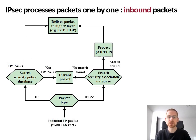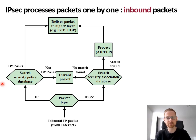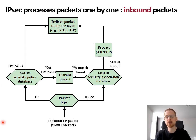This figure shows how incoming packets are processed by IPsec. An inbound packet is received, and the receiving host determines whether it is a regular IP packet or an IPsec packet. If it is a regular IP packet, it is transferred to the Security Policy Database to check whether this type of packet can bypass IPsec or not. If it can bypass IPsec, the packet is delivered as-is to the higher layers such as TCP or UDP. However, if IPsec cannot be bypassed for this type of packet, the packet is discarded as the proper security measures were not used.